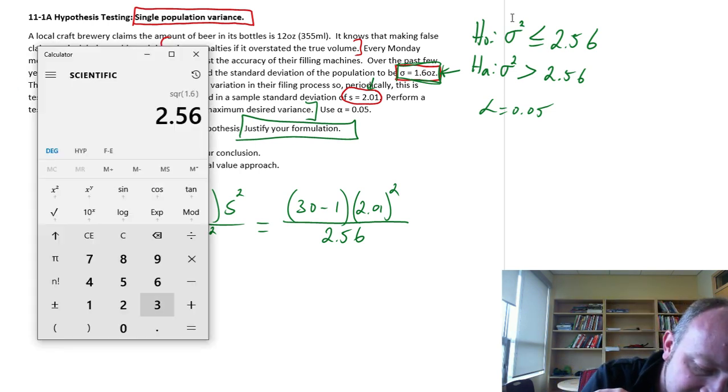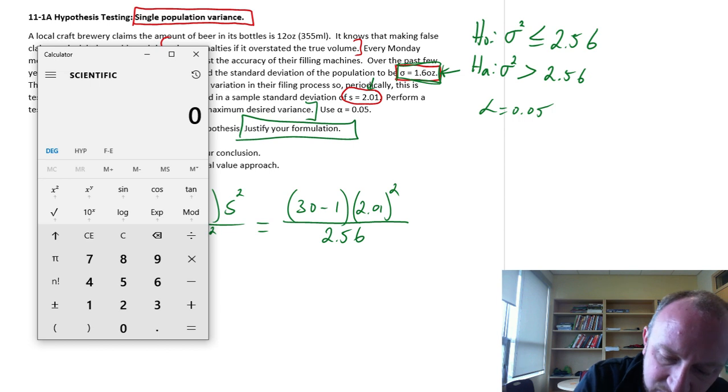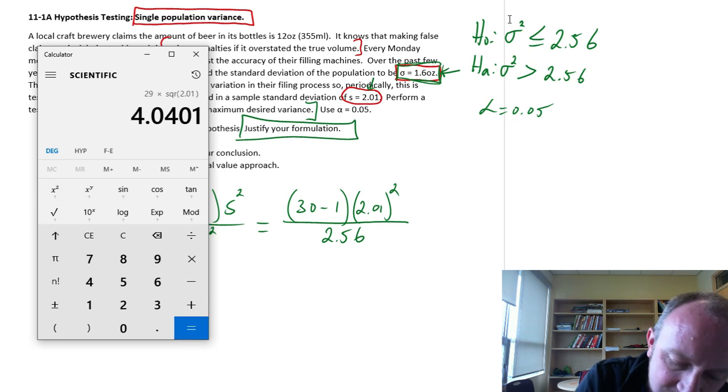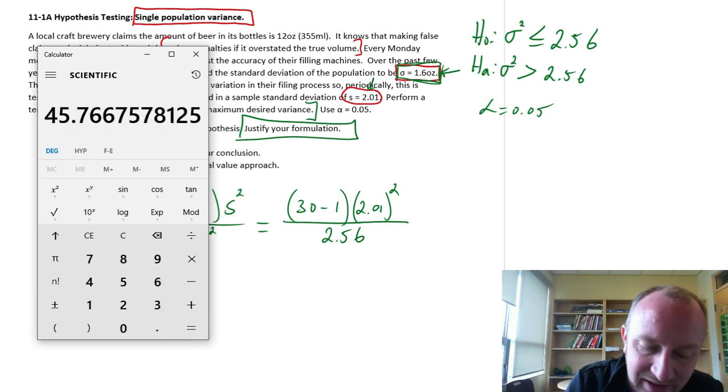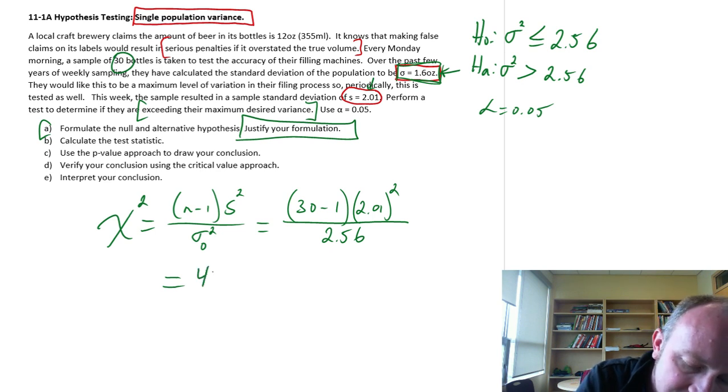So this is going to be 30 minus 1 is 29 times 2.01 squared equals and divide that by 2.56 and I have a test statistic of 45.77.